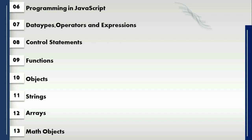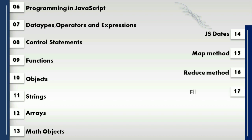Then we will learn about map objects, rounding numbers, ceiling, rounding — everything we are going to see. Then JS dates — how many types of dates we have, how many formats we can write the dates. In dates we are going to learn the map method, reduce method, and filter method. These three methods are very important in React and are used in almost every project.